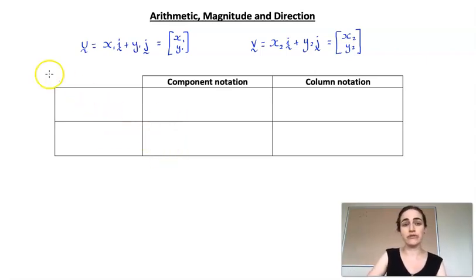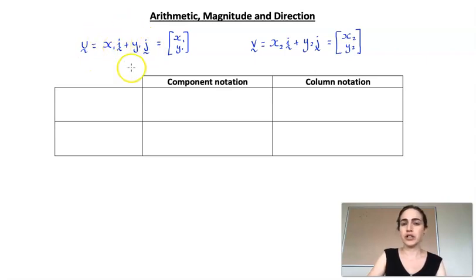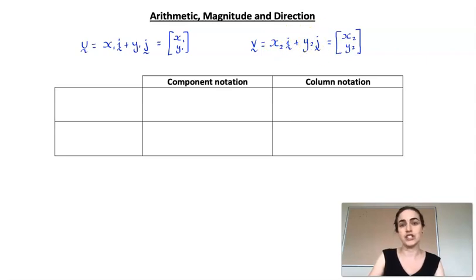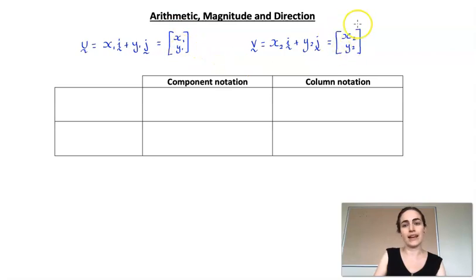So if I consider two vectors, I've got my vector u and my vector v. I've written them out in component notation as x1i plus y1j, where x1 and y1 are just numbers. And then v as x2i plus y2j, where x2 and y2 are just different numbers. If I write them in column notation instead, it would look like these.